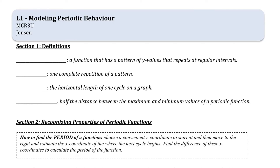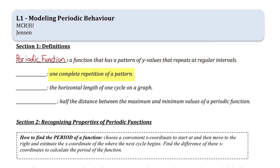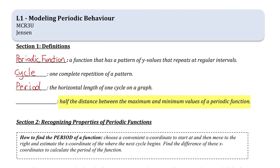In this lesson, I'm going to introduce you to the idea of a periodic function. A periodic function is a function that has a pattern of y-values that repeat at regular intervals. One complete repetition of a pattern is called a cycle, and the horizontal length of one cycle on the graph is called its period. Amplitude is half the distance between the max and min values of a periodic function.